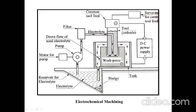The next element is the servo motor, which plays an important role. The servo motor is connected to the tool. Its main function is to provide the downward motion to carry out the machining action. When machining takes place, material is removed, and a constant tool feed is maintained with the help of the servo motor. This is the construction of your electrochemical machining process.